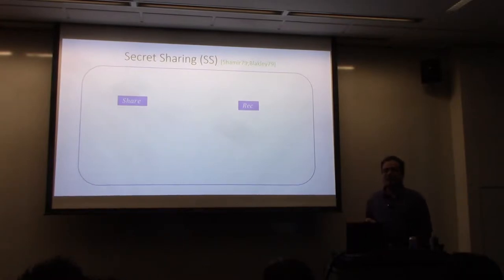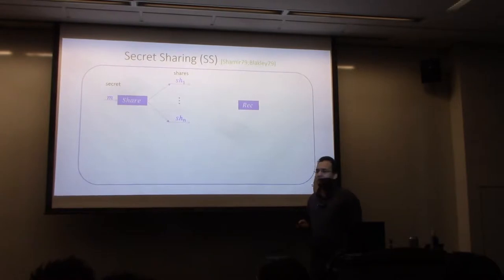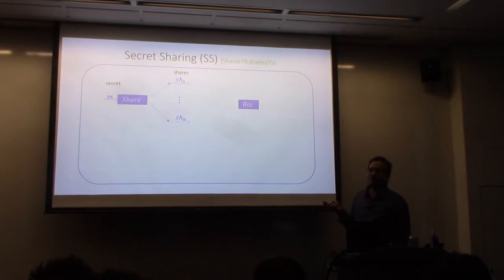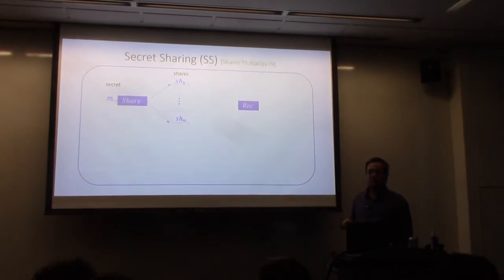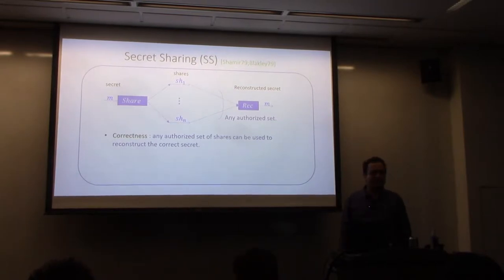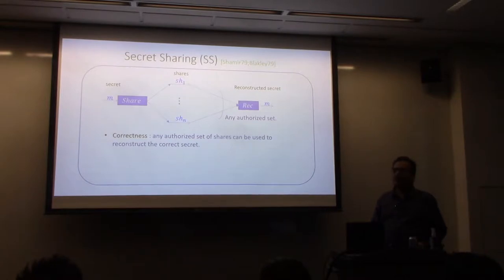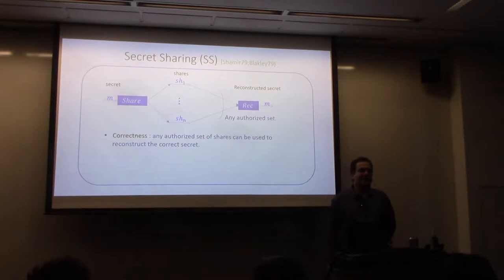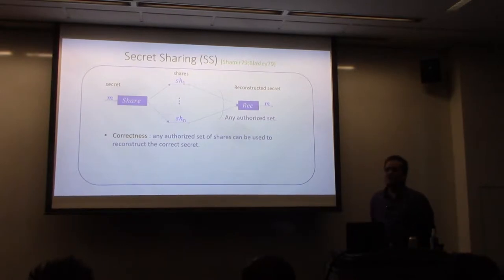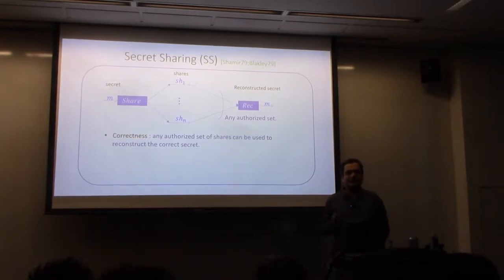The basic setting is as follows. We have two algorithms — share and reconstruct — and we have a message M, which we call our secret. The share algorithm takes this message and breaks it into several parts or shares: SH1 to SHN. A subset of these shares is given as input to the reconstruction algorithm, and if this subset is large enough, you can get the original message M back. What does 'large enough' mean? There are several possibilities.